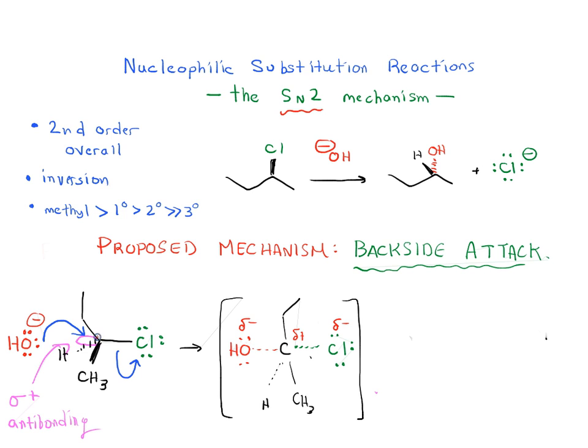And as this occurs, the geometry of the central carbon goes from tetrahedral. So the CH3 starts swinging towards the chloride a little bit, so does the H, until everything is sort of flat. These three groups here actually form a slight bit of a plane.